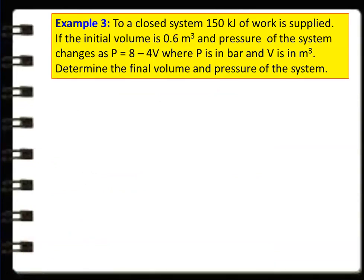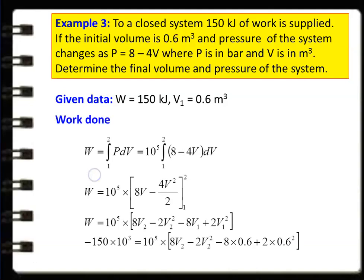Example 3: For a closed system, 150 kJ of work is supplied. The initial volume is 0.6 m³ and the pressure of the system changes as P = 8 − 4V, where P is pressure in bar and V is volume in m³. Determine the final volume and pressure of the system. Given: W = 150 kJ, V1 = 0.6 m³. Work done is ∫P dV. Substituting P = 8 − 4V, we integrate (8 − 4V) dV and multiply by 10⁵ to convert from bar to N/m².